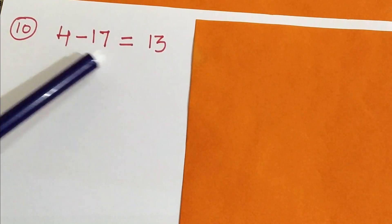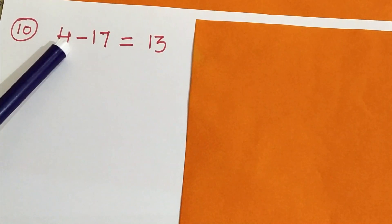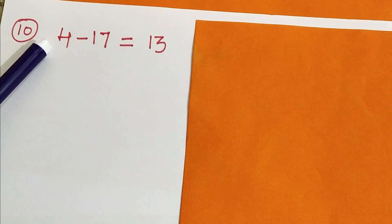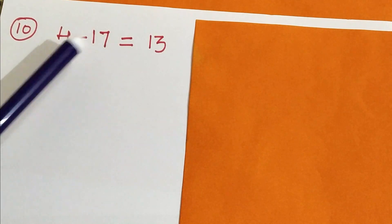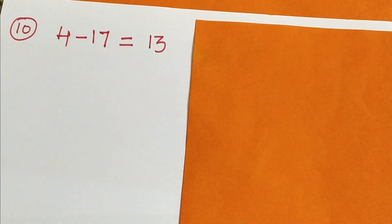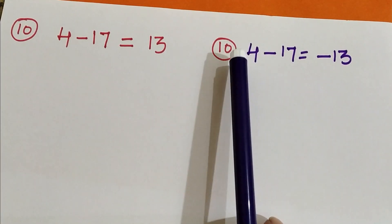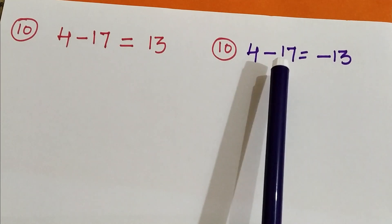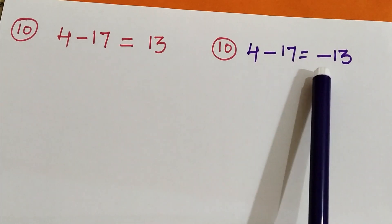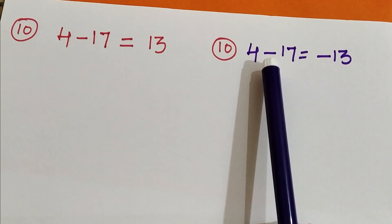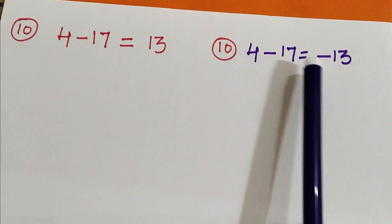Last one: 4 minus 17. The symbol of 4 is plus (no symbol means plus) and the symbol of 17 is minus. Plus and minus means subtraction: 17 minus 4 is 13. But students write just 13, which is a wrong procedure. The correct answer is minus 13. The reason is we have to keep the symbol of the bigger number. Out of 4 and 17, the bigger number is 17, and its symbol is minus. So the answer is minus 13.